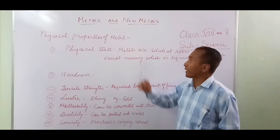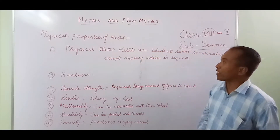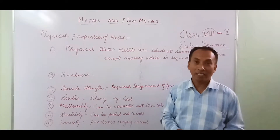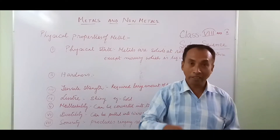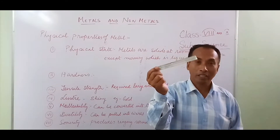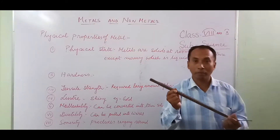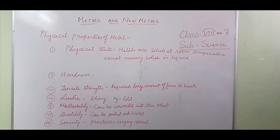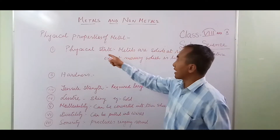Now we move to the physical properties of metals. I have brought some metals to show you. This is zinc, these are iron nails, this is an aluminum sheet, and this is an iron bar. All of these are metals, and they all have certain physical properties.